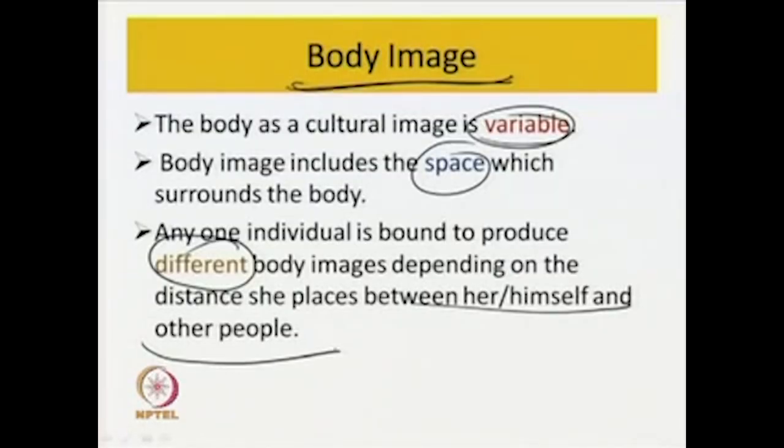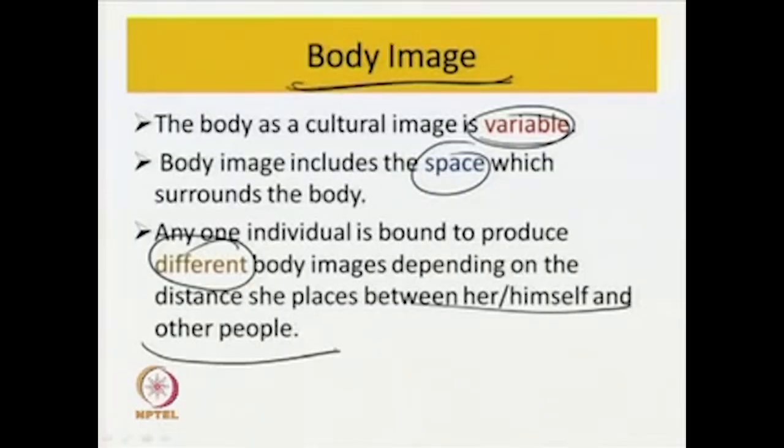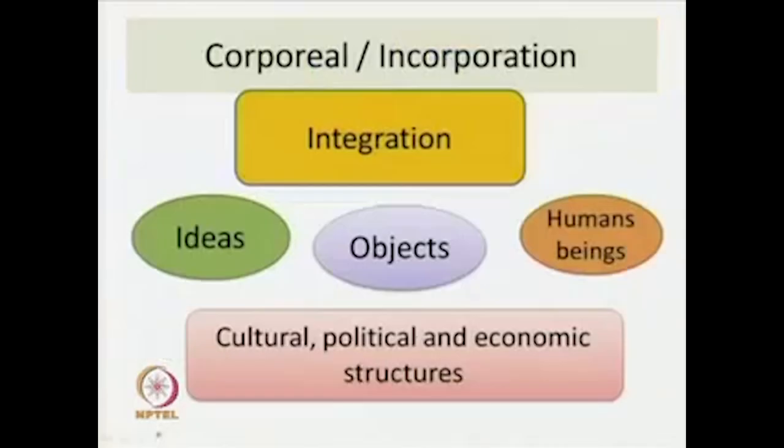As a cultural image, you may feel you have a body of a certain kind, but from a cultural standpoint, body is variable. The body also goes beyond its physical margins and includes responses to the space which surrounds it. Even a single individual is bound to produce different body images depending on how he or she places himself or herself not only in relation to surroundings but also to other people. There is a sophistication to thinking about the body here which does not relegate it to a second place.